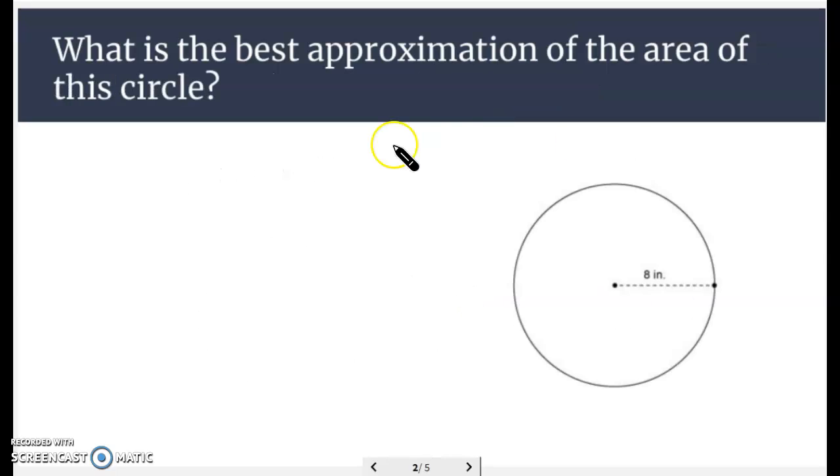Let's go to another one here with an image. What's the best approximation for the area of this circle? The radius is 8. Remember, our area formula, pi r squared.